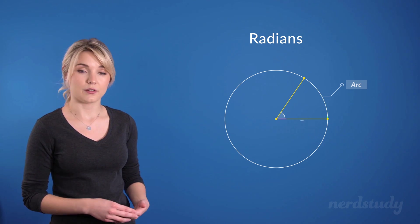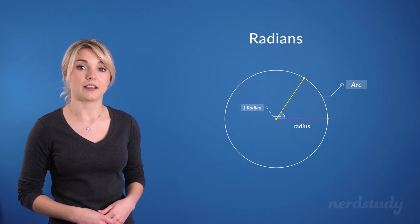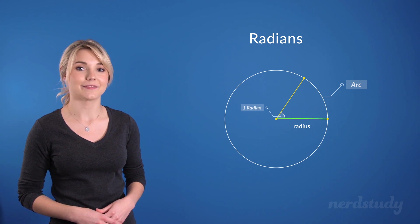So again, here's the radius. And one radian is just however much angle is needed to make its arc equal in length to the radius.